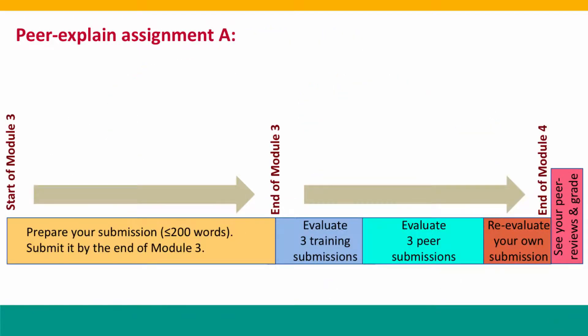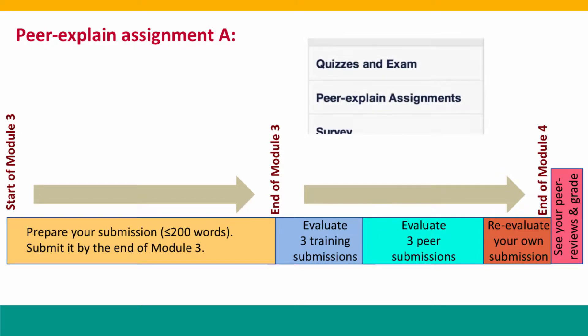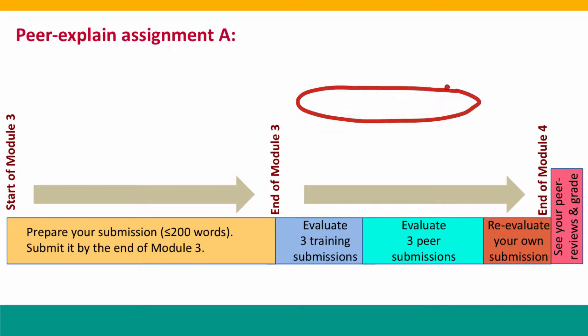Here's how it plays out for assignment A. You'll find a link to the assignment in the sidebar. When you click on it, you'll see that we've released the submission phase of the assignment so that you can work on it now. Your submission is due by the end of Module 3, the same time that the graded quiz for Module 3 is due. Once that deadline has passed, everybody's submissions are put into a pool, shuffled, and given to other students.